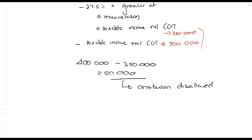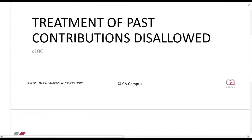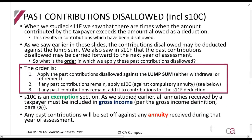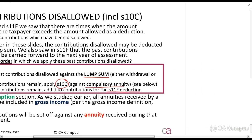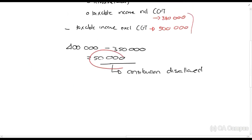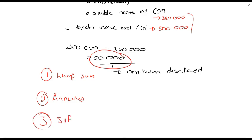What I want you to understand is there's an order you need to follow, found in Section 10C. The order says you must first apply it against a lump sum, then apply it against Section 10C when you receive an annuity, and then if there's anything left, use it in Section 11F. So that 50,000 rands contribution disallowed goes one against the lump sum, two if there's anything left, usually there's nothing, against the annuity, and three if there's still anything left, Section 11F.